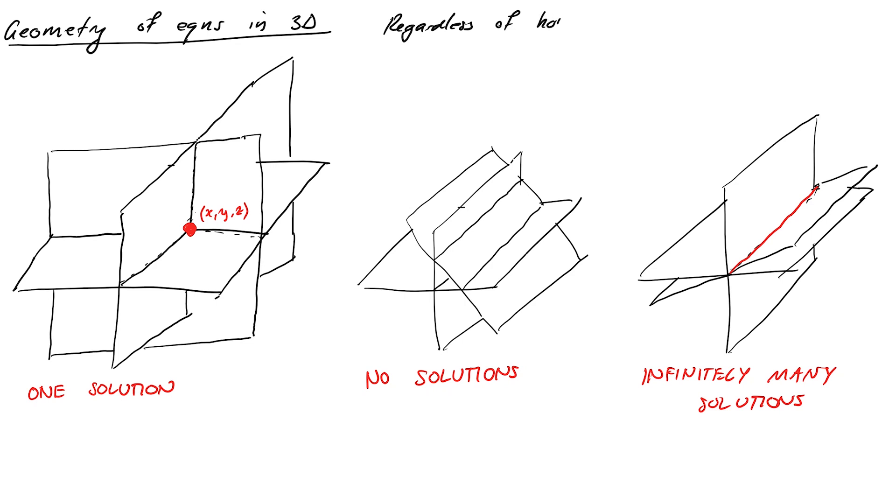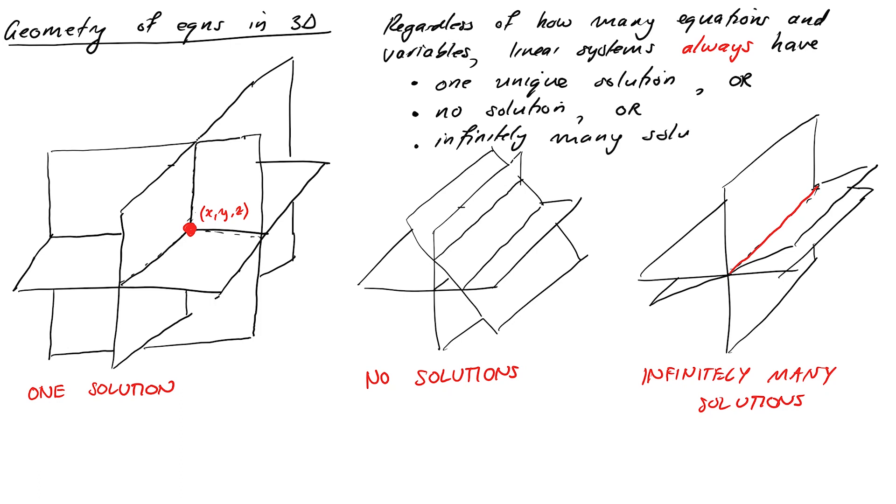It turns out that no matter how many equations we have or variables we have in our equations, the number of solutions will always be one of those three cases. There'll either be no solution, one unique solution, or infinitely many solutions. We need to keep this in mind when developing our methods for solving systems, because we shouldn't be surprised when things come up that lead to these outcomes. Before we move on, can you think of any other arrangements of planes that could give us no solutions or infinitely many? I showed you a couple of ways, but there are others. Pause the video, see if you can think of a few more, draw some sketches.